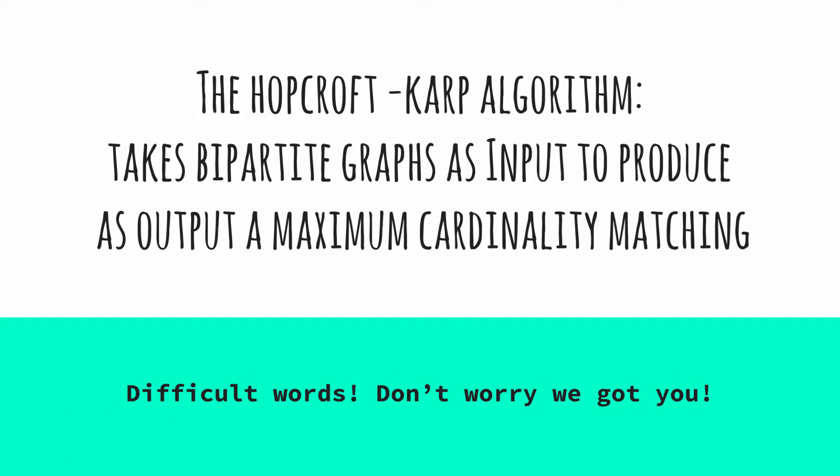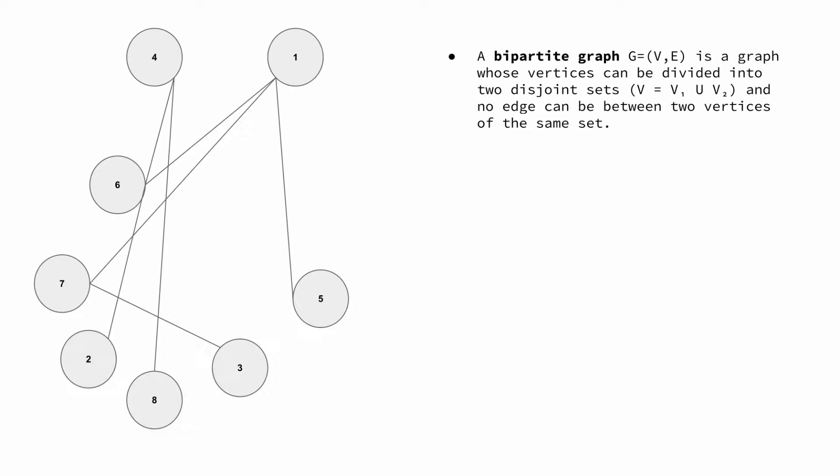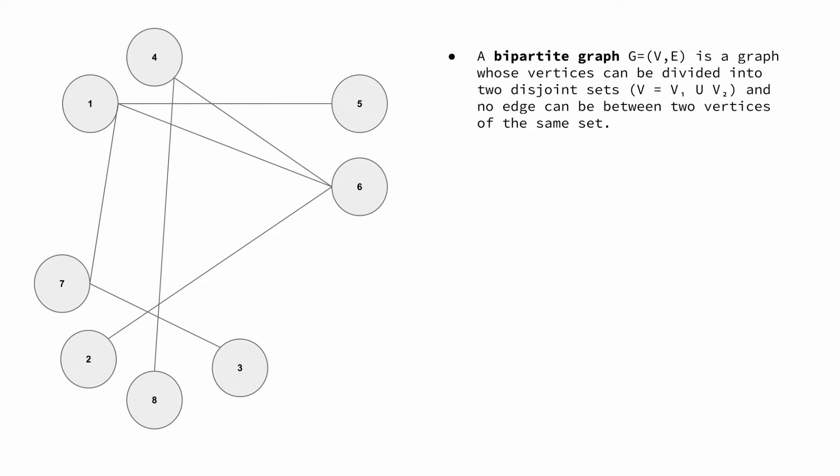Hi and welcome to this video explaining the operation of the Hopcroft-Karp algorithm. The Hopcroft-Karp algorithm takes a bipartite graph as input to produce as output a maximum cardinality matching. This is a bipartite graph even though it doesn't seem like one. Bipartite graph means that the vertices can be divided into two sets and all edges connect vertices from one set to the other.